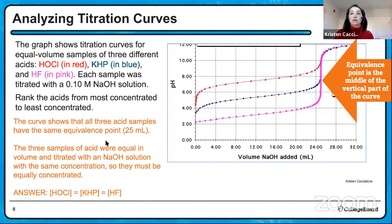Our second FRQ has three beakers, each containing 50 milliliters of a 0.10 molar solution. Beaker one has HC2H3O2 — a weak acid solution. Beaker two has NaC2H3O2 — the sodium salt of the conjugate base of that weak acid. Beaker three has HCl — a strong acid. So we have three different kinds of solutions. All solutions are at 25 degrees Celsius.